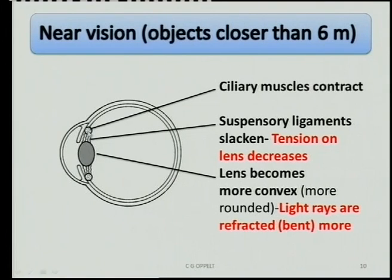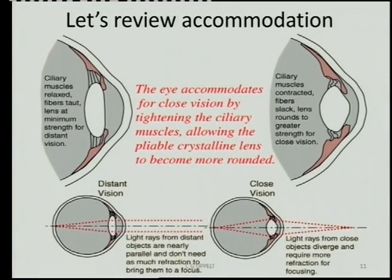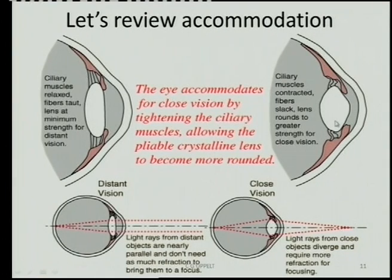The ciliary muscle within the ciliary body has now contracted, causing the lens to become more rounded or convex. This means that light rays can be bent more, so that a very clear image can be seen on the retina — more specifically on the yellow spot. In the diagram, on the left you can see distant vision: the ciliary muscle is relaxed, the ciliary body is far from the lens, the ligaments pull, and the lens is flat. On the right, the ciliary muscle contracts, moves closer to the lens, there is no pull on the ligaments, and the lens becomes much more rounded or biconvex.